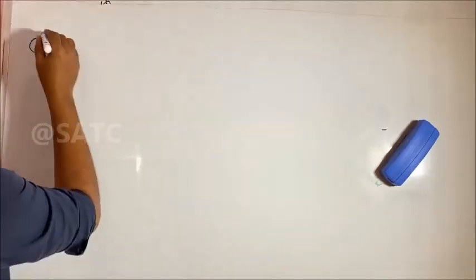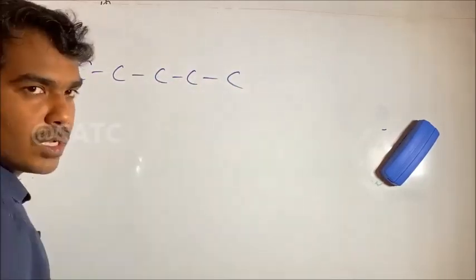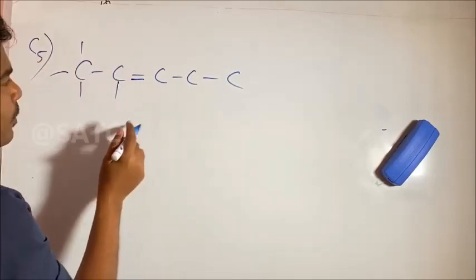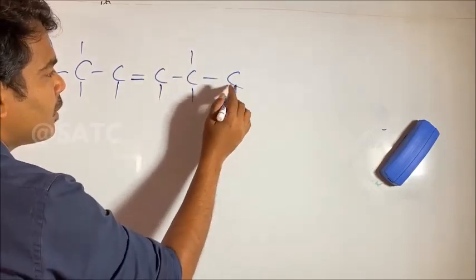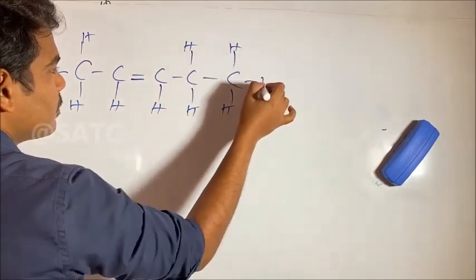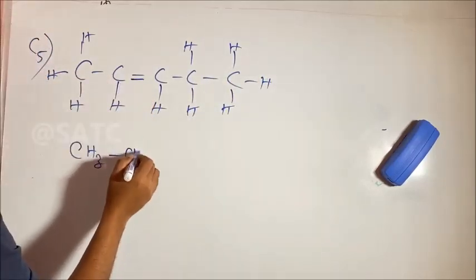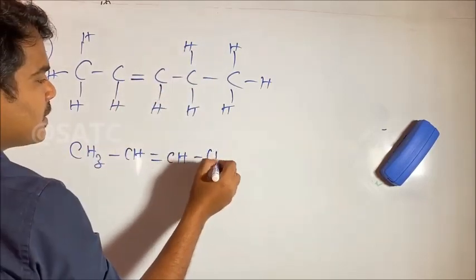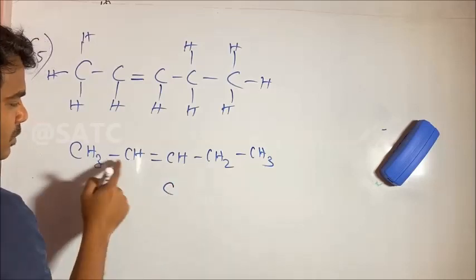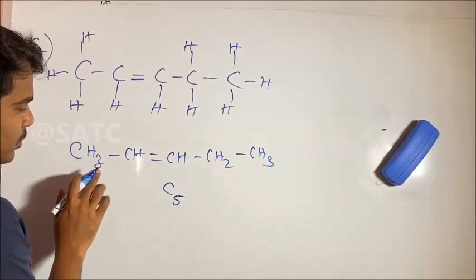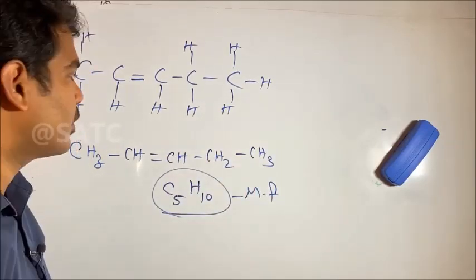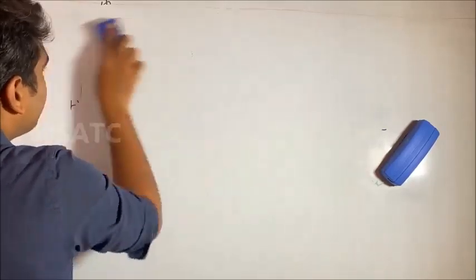For 5 carbons, C5: we draw 1, 2, 3, 4, 5 carbons. The condensed formula is CH3-CH=CH-CH2-CH2. The molecular formula: 5 carbon, 10 hydrogen — C5H10. This is the molecular formula for pentene.